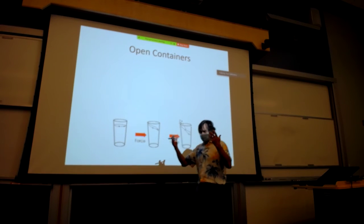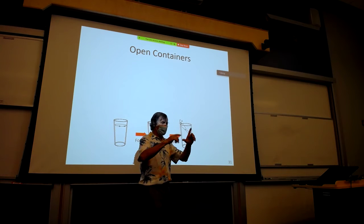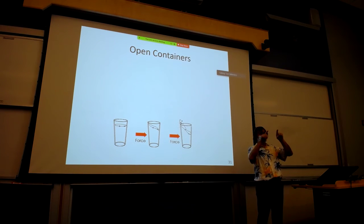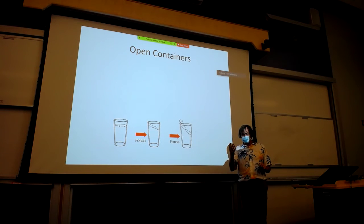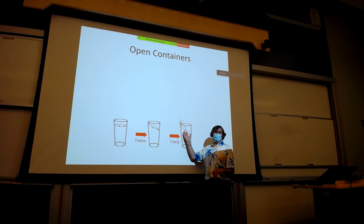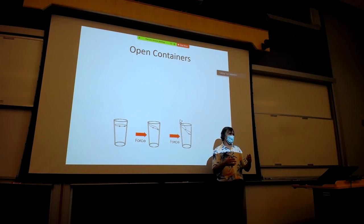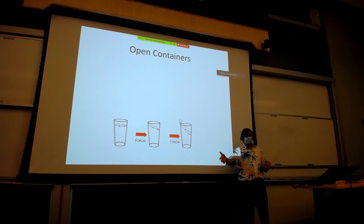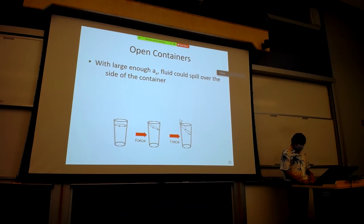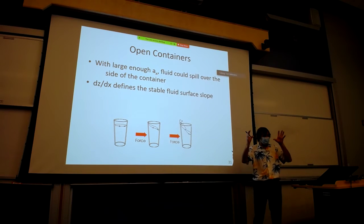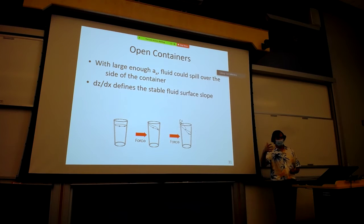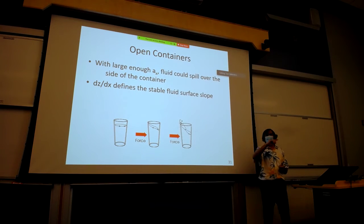Two fundamentally different systems use the same set of equations. One is open containers — with open containers, if you accelerate fast enough you can actually start to lose volume, which creates a problem when calculating pressure distributions and forces. The other is closed containers. The equations we developed are still relevant and are not modified. The slope equation is still applicable whether or not you lost fluid, helping identify the geometry.